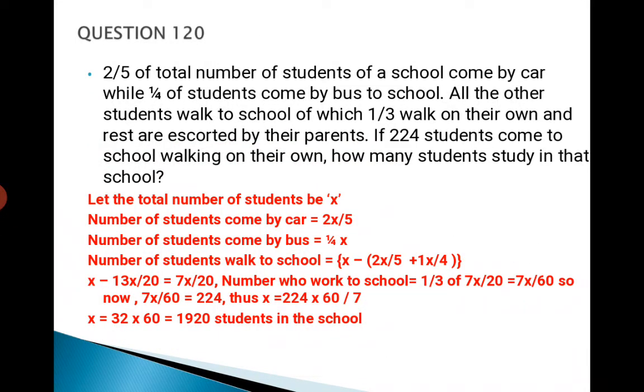The next question, a very interesting one, so I want all your attention here. Two-fifths of the total number of students of a school come by car, while one-fourth of the students come by bus. All the other students walk to school, of which one-third walk on their own and the rest are escorted by their parents. If 224 students come to school walking on their own, how many students study in that school?